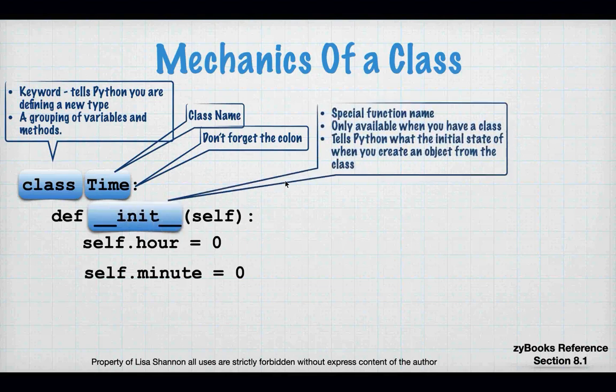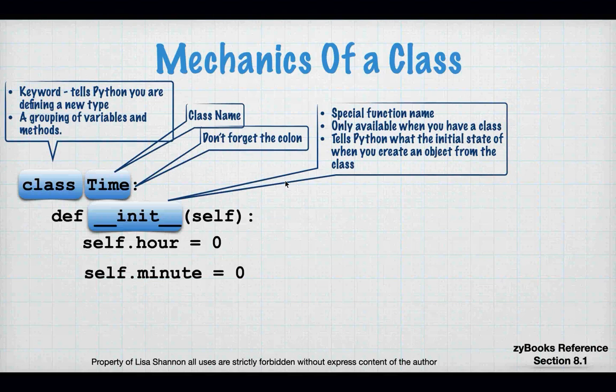A class at a minimum has to have a function called `__init__` — that's two underscores, init, two underscores. That is very specific; you can't have it anywhere else in Python other than in a class. It's called the constructor. The constructor is a special function that tells Python how you want an object created from this class to be set up when you first create it.